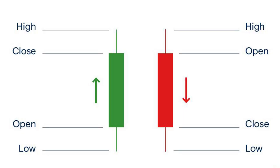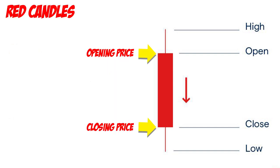The shadow or wick of our candle tells us how high the price went for that day or how low it traded. The upper shadow or wick shows that the price was that high that day, while the lower shadow or wick tells us it was that low. Simple, right?